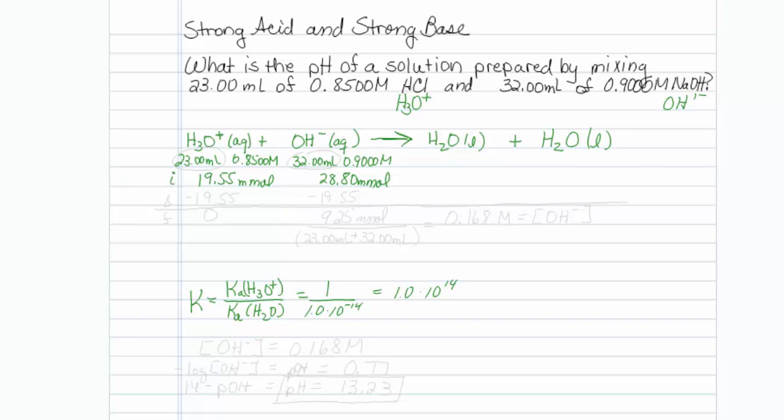So essentially we can sort of treat this like a limiting reagent problem again. So here's our initial row. Stoichiometry is one to one, so in our example hydronium is our limiting reagent.